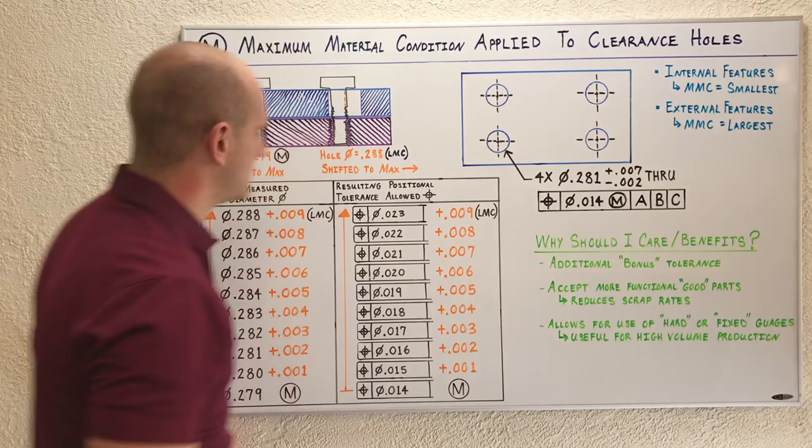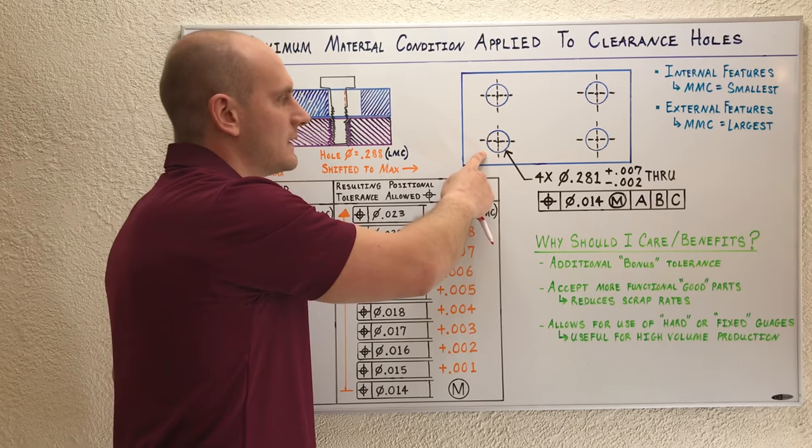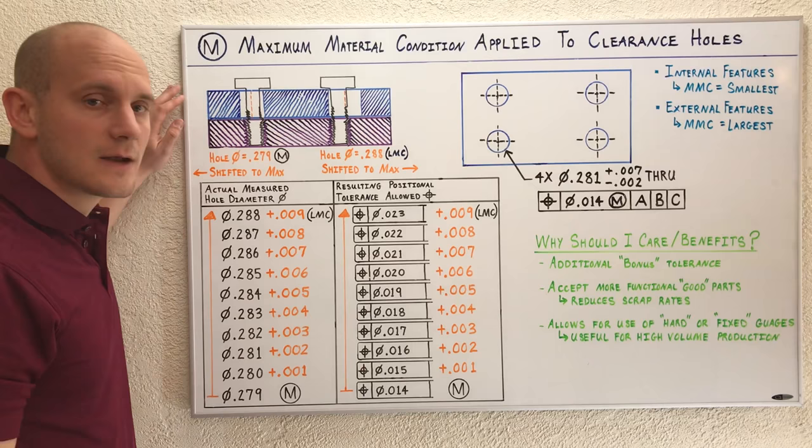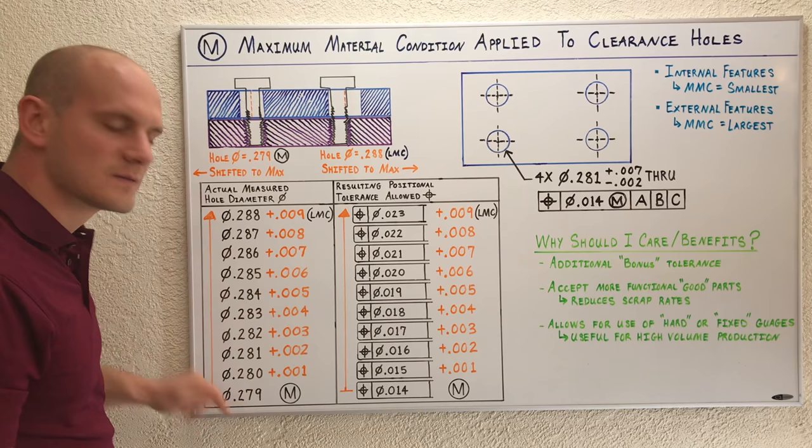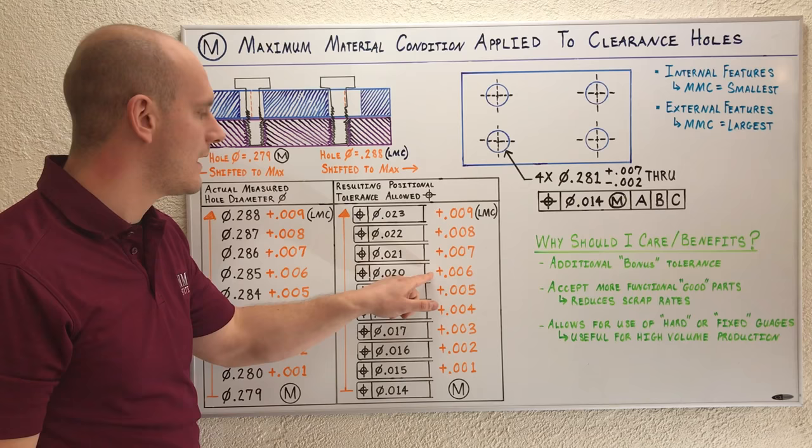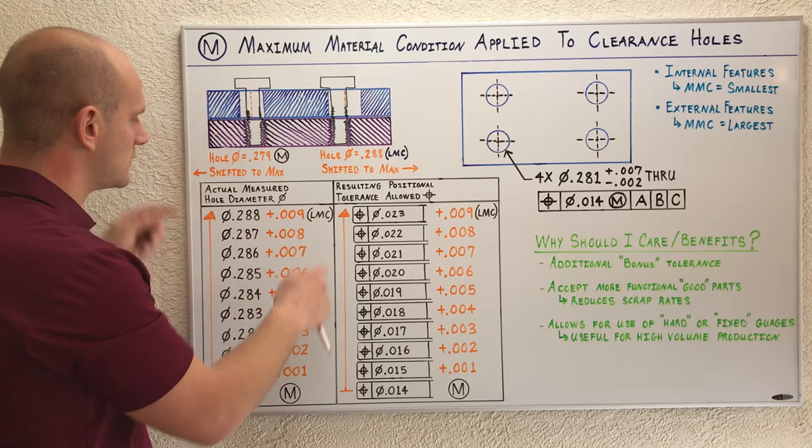This creates a relationship between the positional tolerance and the actual measured hole diameter. Let's take an example. Say this part is machined and the inspector measures the hole at 285. That's six thousandths bigger than my maximum material condition size, so I add six thousandths to my positional tolerance for an allowed resulting positional tolerance of 20,000. 14 plus 6 equals 20,000. That's what MMC does—it creates a relationship between actual measured hole diameter and resulting positional tolerance allowed.